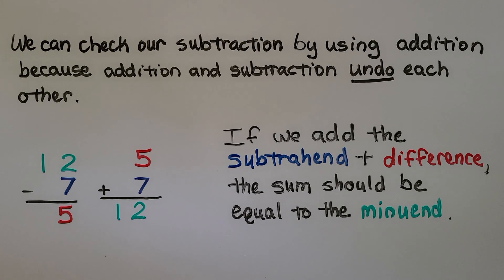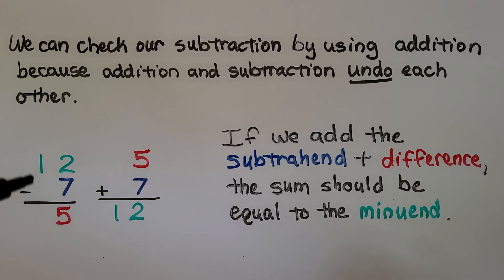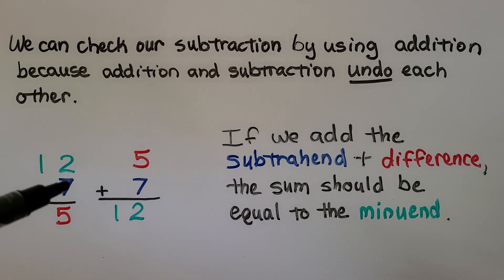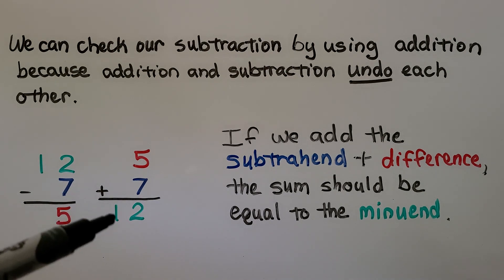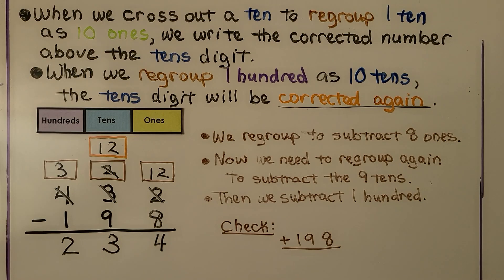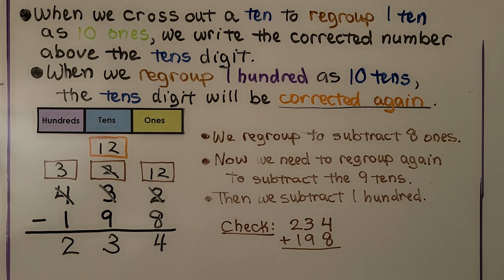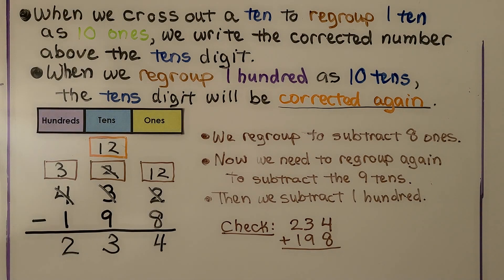We can check our subtraction by using addition, because addition and subtraction undo each other. If we have twelve minus seven, that's equal to five. If we add the subtrahend and the difference, the sum should be equal to the minuend. So we can check to see if our difference is correct. We have our subtrahend, one hundred ninety-eight. We are going to add the difference, two hundred thirty-four, to the subtrahend. If our sum is equal to the minuend of four hundred thirty-two, we know we did our subtraction correctly.